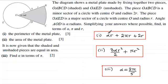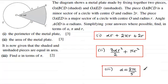In part one, the perimeter is alpha r plus 2 pi r plus 2r. In part two, the area of the metal plate is 3 alpha r squared over 2 plus pi r squared. In part three, alpha in terms of pi is given by alpha equaling 2 pi over 5. If you didn't get any of these answers, I'll go back and show you how I got them.